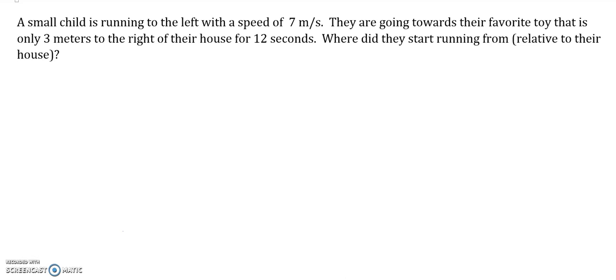It's about a person, a child running towards their favorite toy. Let's assume they actually get their favorite toy. So let's just assume they actually get to it instead of wondering if they ever reached it. You want to know, based on this information, assuming they get to their favorite toy, where did they start running from?